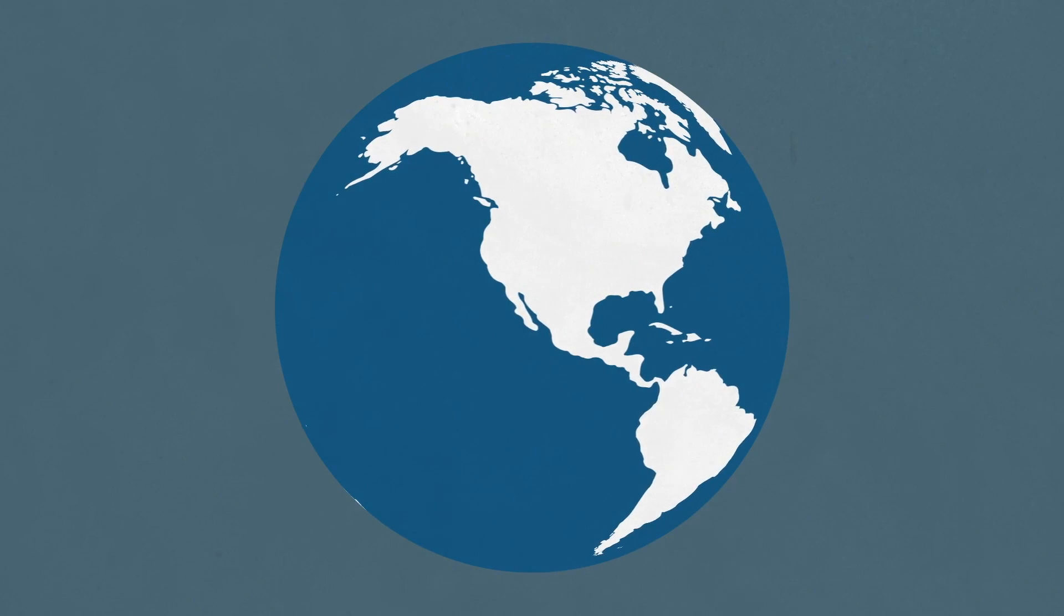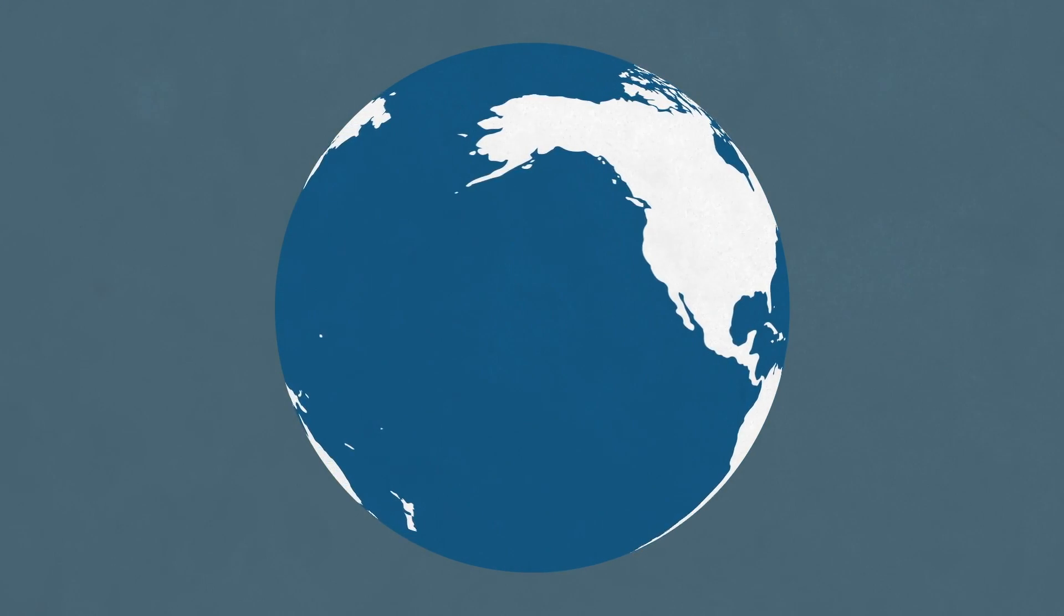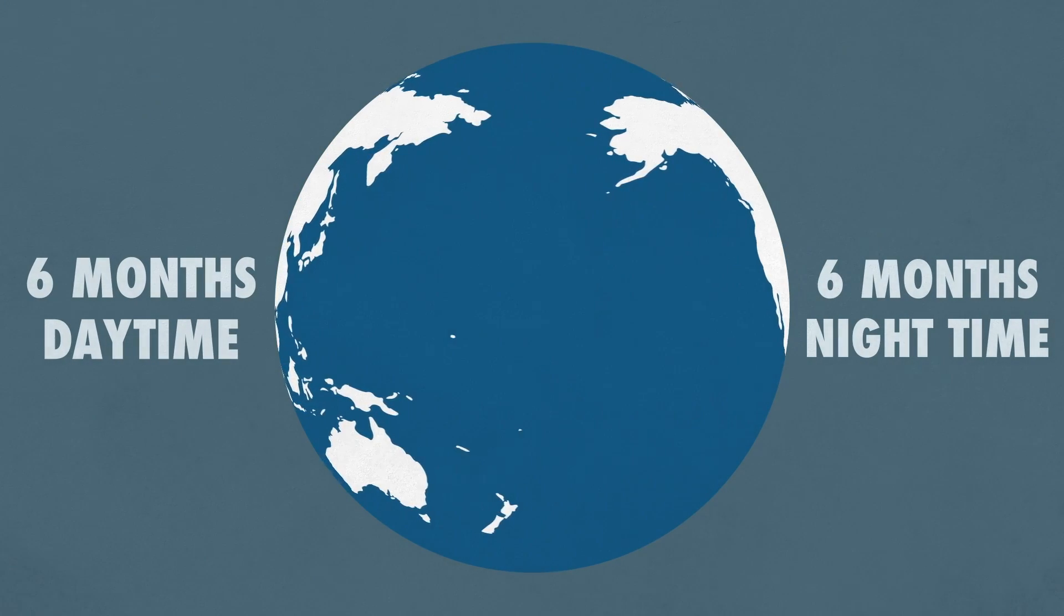But let's say we slow down even further, and lose spinning momentum altogether. This would mean that wherever you were on Earth, you would experience six months of daytime followed by six months of nighttime.